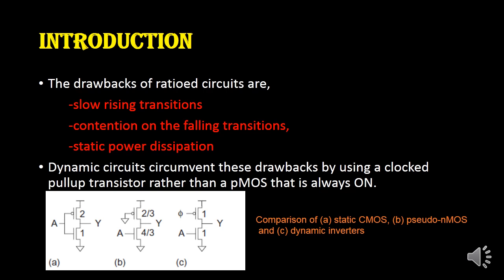The figure shows a normal static CMOS circuit, then a pseudo NMOS circuit — pseudo NMOS is a ratioed circuit — and the last one is a dynamic inverter. In pseudo NMOS, the PMOS transistor is always in the on state, which causes the drawback. In a dynamic circuit, the PMOS transistor is connected to a clock signal, so depending on whether the clock is 0 or 1, the operations take place.